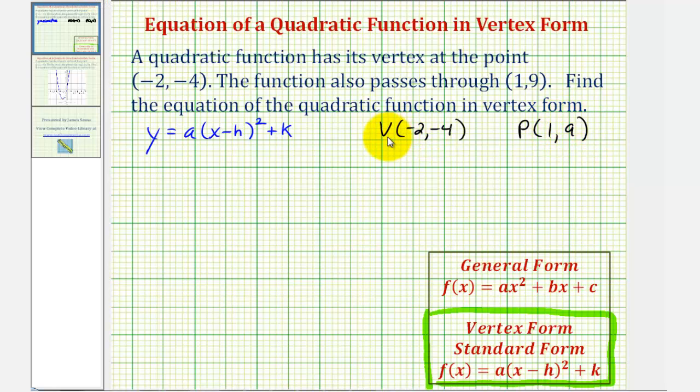So to begin, because we're given the vertex, we know that h must be equal to negative two and k must be equal to negative four. So for the first step, let's perform these two substitutions into our equation.